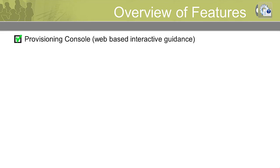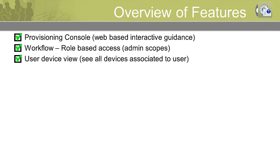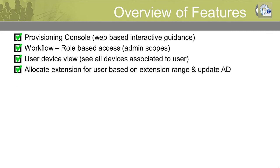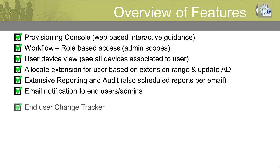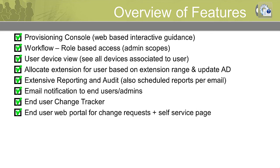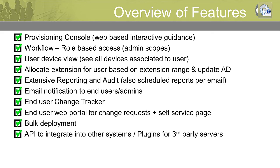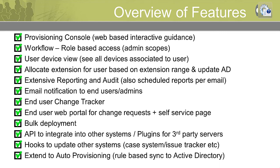The Uplink's provisioning system has an extensive feature set: provisioning console, workflow, role-based access, user device view, allocate extension for user based on extension range and update Active Directory, extensive reporting and audit, email notifications to end users and admins, end user change tracker, end user web portal for change requests and self-service page, vault deployment, API to integrate into other systems, plugins for third-party services, hooks to update other systems, and extend to auto-provisioning.